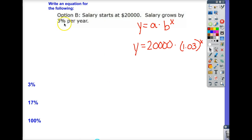Let's start out looking at this question that we had from the last video. So write an equation for the following. This is one of the options for salaries that we talked about last time. So the salary starts at $20,000 and it grows by 3% each year.